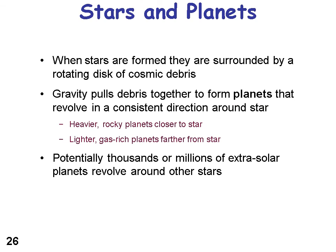When stars are formed, they are surrounded by a rotating disk of cosmic debris, and gravity pulls that debris together to form planets, which revolve in a consistent direction around the star. Heavier, rockier planets are closer to a star, and lighter, gas-rich planets are further away. So we see rocky planets — Mercury, Venus, Earth, and Mars — orbiting closer to the sun, while gaseous planets like Jupiter and Saturn are further out.